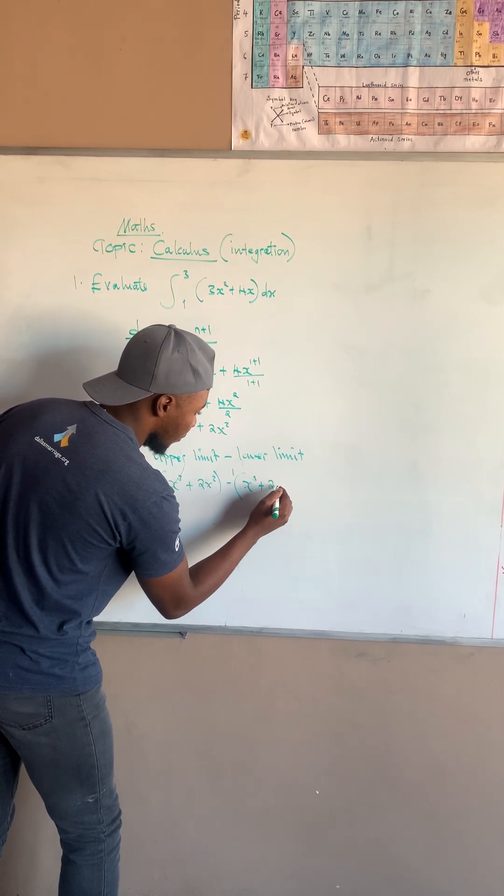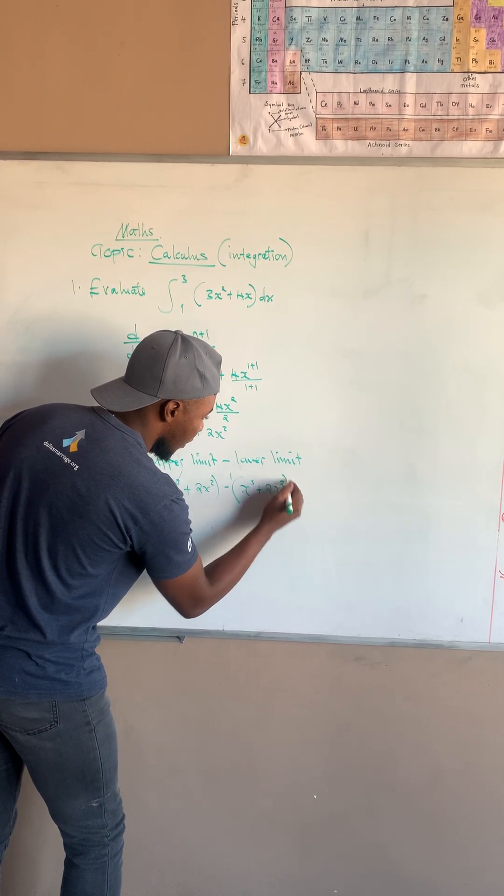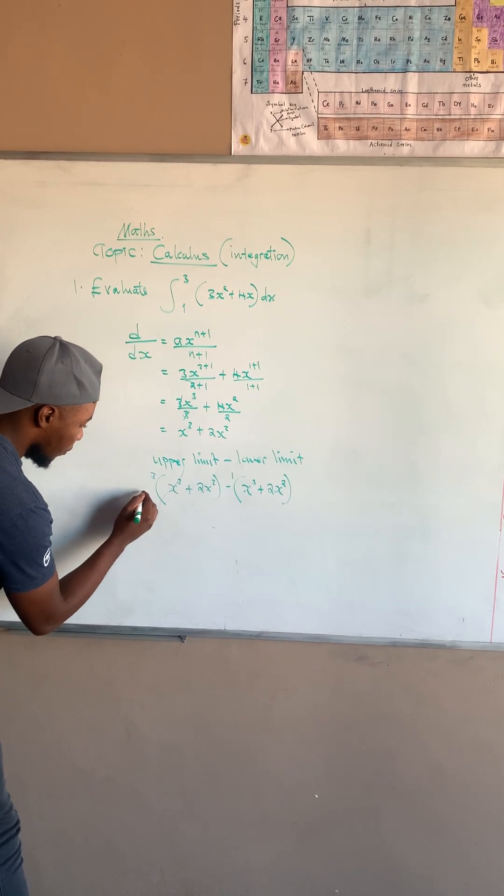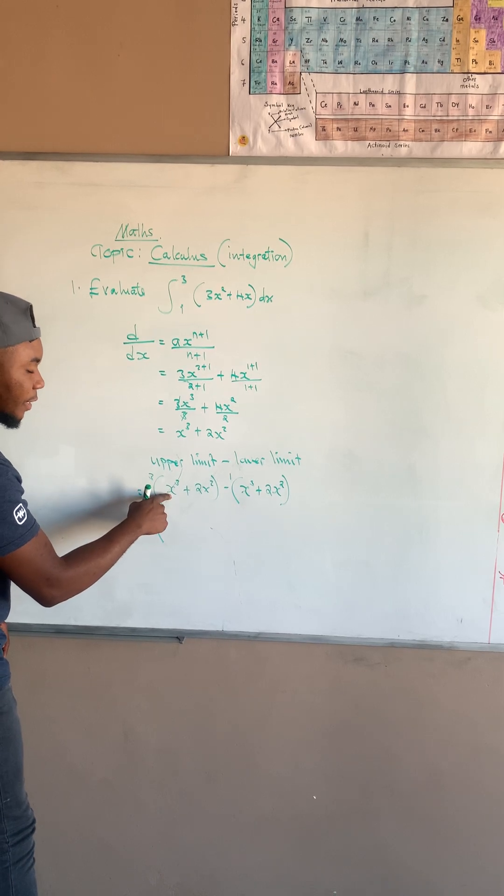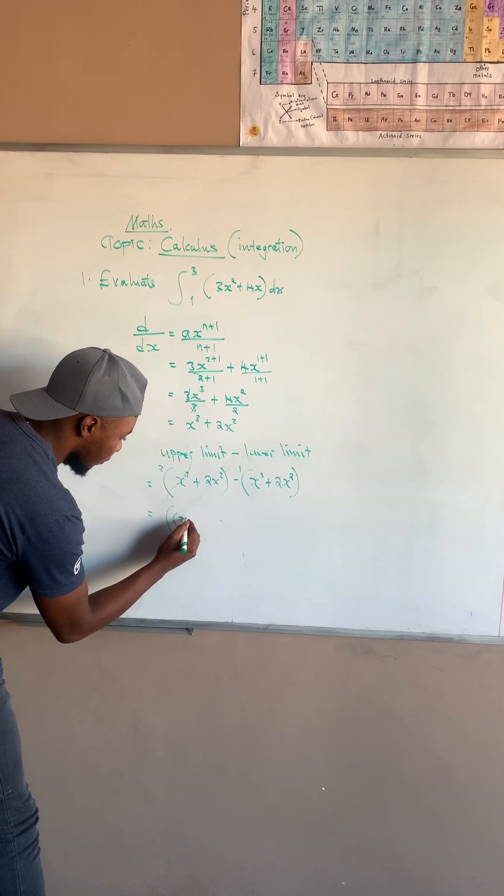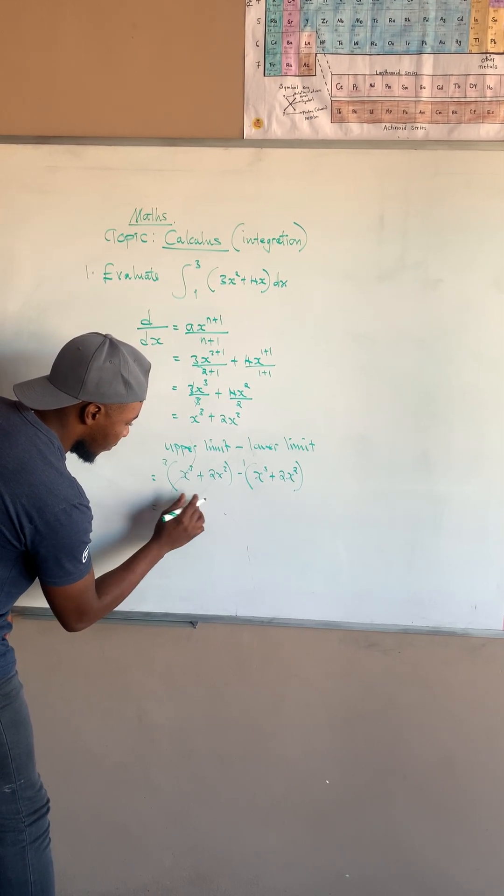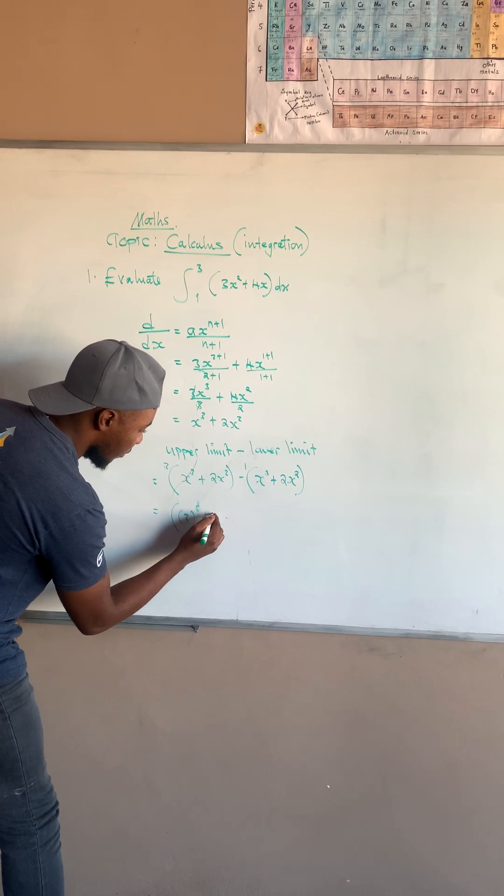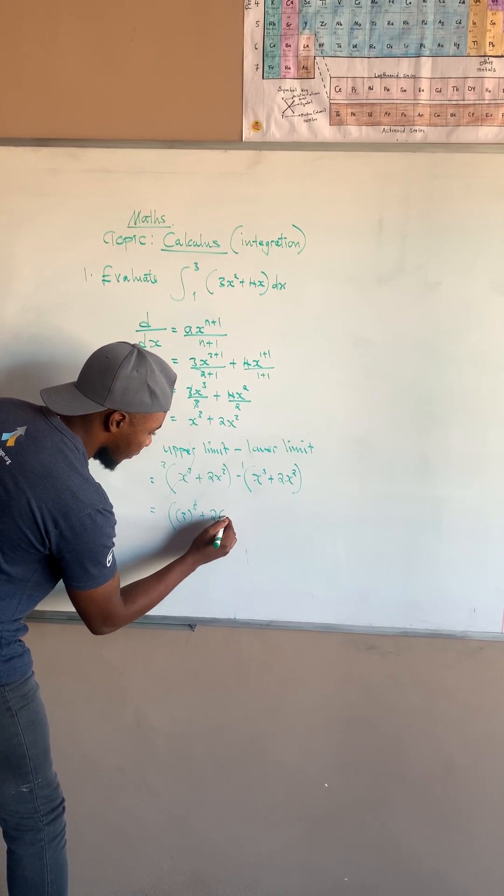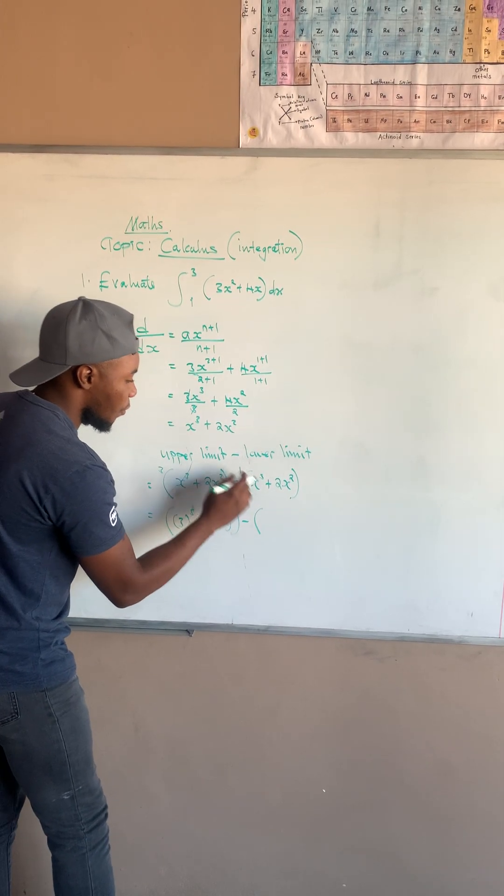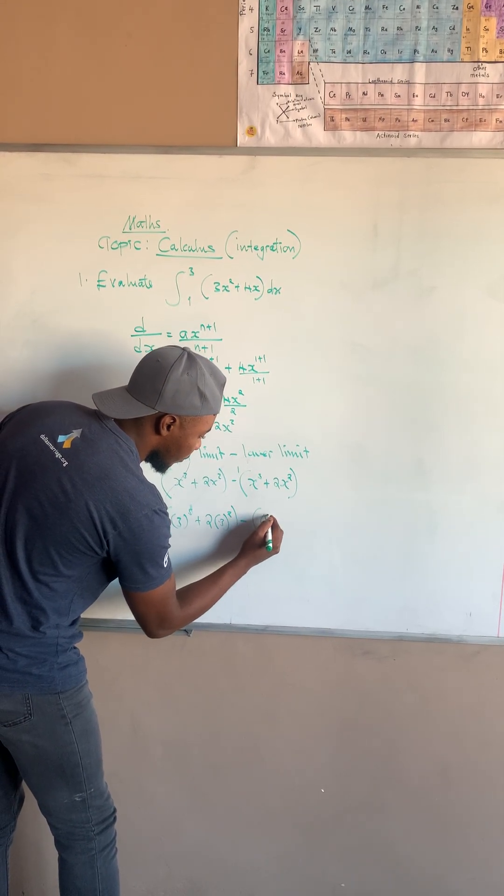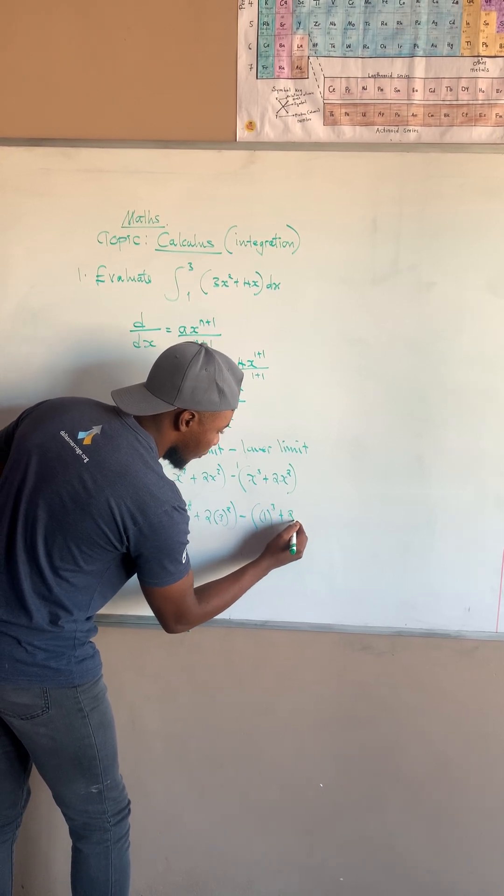Okay, then also what you do is that you substitute 3 where you find x. So here x to the power of 3, then plus 2, open bracket, then 3, to the power of 2, close bracket, minus—then here you substitute with 1, the lower limit—so 3, then 2, here, 1 to the power of 2, and close brackets.